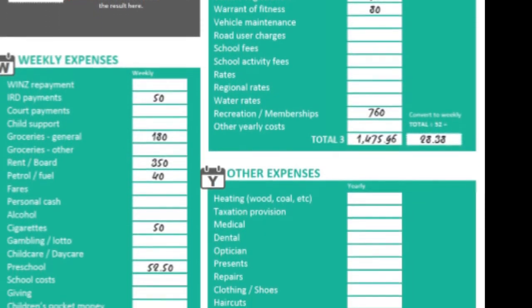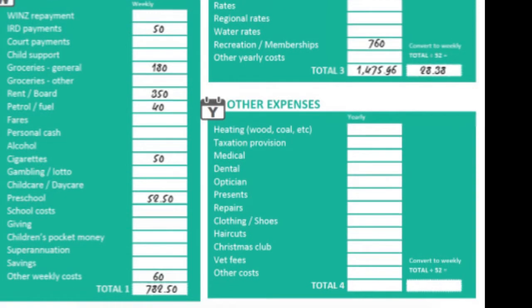I also take pretty good care of my health and my children, so my other expenses include medical and dental care, presents for birthdays and Christmas, a clothing budget for the whole family, and vet fees for the cat. We divide this by 52 as well, and we get my total here.